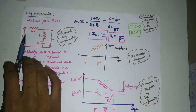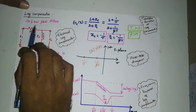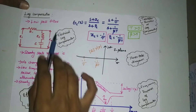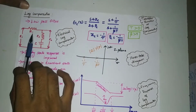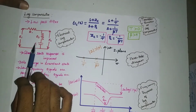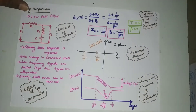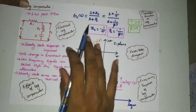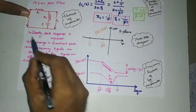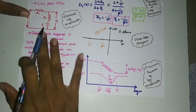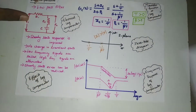Lag compensators are a low pass filter — they will add some phase lag to the system. This is the circuit for the low pass filter as well as the lag compensator. By correctly choosing the values of R1, R2, and C, we can achieve the required output and the required phase value. These are the effects of lag compensators.